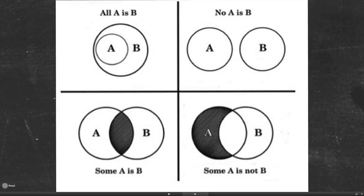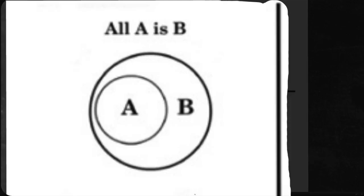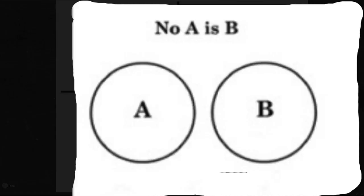And in his logic, what he did was he gave some very clear definitions of how connections work. And here we have four of them. Either all of A is in B, or no A is B,